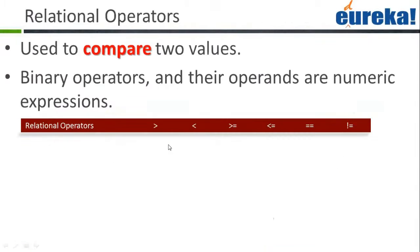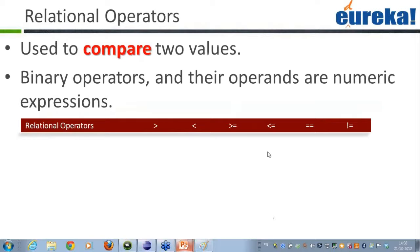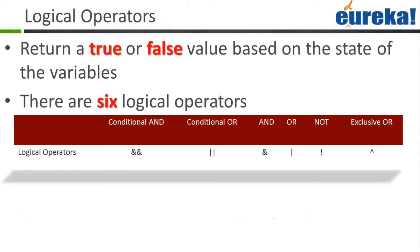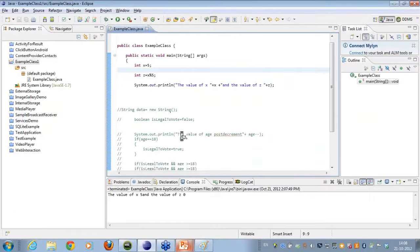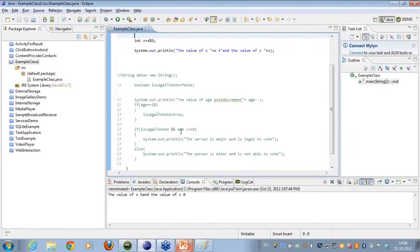We also have various relational operators which are used to compare two values. I have already used these relational operators so I don't think I will be covering them again. Binary operators and their operators are numeric expressions. Then we have the various logical operators — the AND operator and the OR operator.